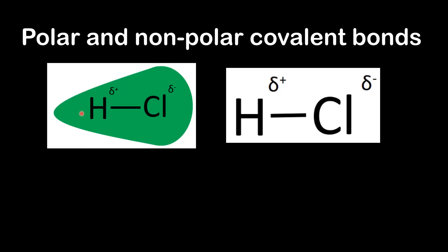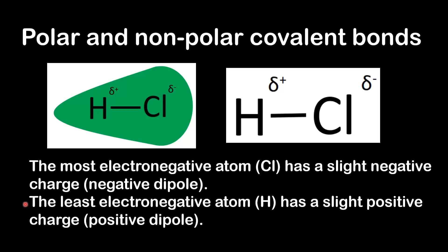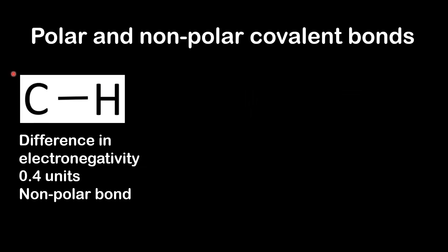In this example of a polar covalent bond, the most electronegative atom — chlorine — has a slight negative charge, or a negative dipole. The least electronegative atom — hydrogen — has a slight positive charge, or a positive dipole. On the right we have another way of representing the bond, where the hydrogen has the positive dipole and the chlorine has the negative dipole.